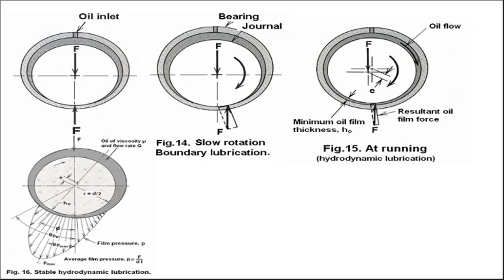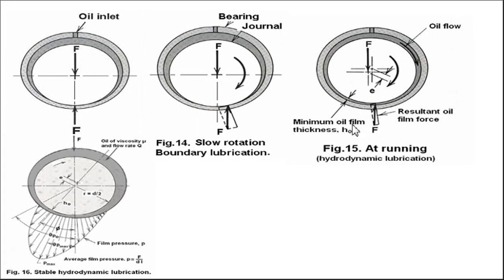Next we will see how this hydrodynamic bearing works. The journal sits inside the bearing with oil supplied through an oil inlet. Initially, when a downward force acts on the journal, the bearing reaction force is in the opposite direction. Once rotation starts, the point of contact between the journal and bearing changes, and the resultant oil film force changes its position from the initial position. In the running condition, both the applied force and the resisting force directions change.